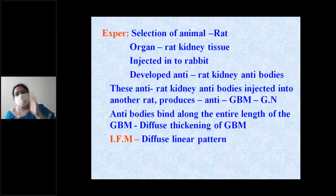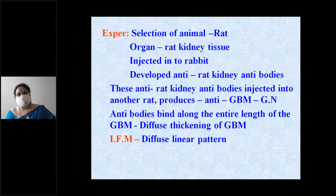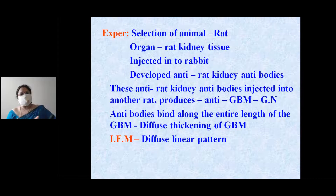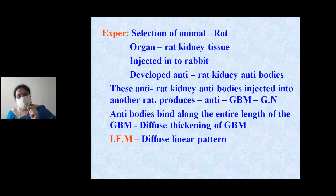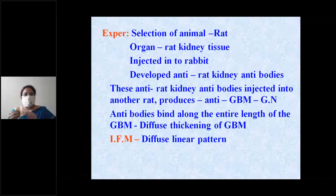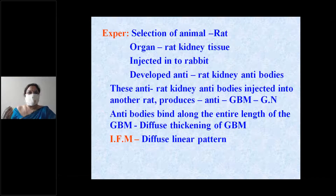When anti-rat kidney antibodies were injected into another rat, they acted as an antigen. Antibodies were produced against this immunoglobulin — that is, anti-rat kidney antibody — causing anti-GBM glomerulonephritis. These antibodies were deposited along the entire length of the glomerular basement membrane in a diffuse pattern.